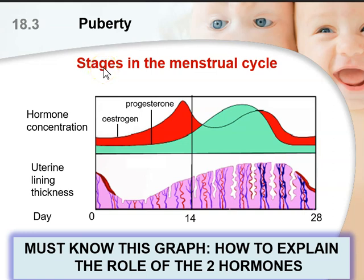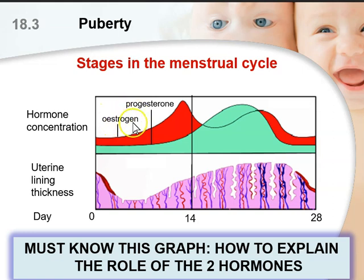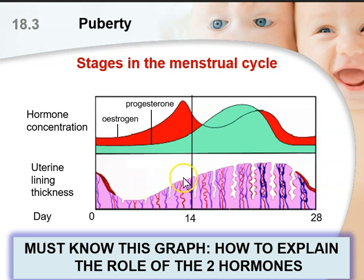Hello everybody, welcome to the third installment of your HPL lecture. In the previous lecture, we spoke about the stages in the menstrual cycle and how the menstrual cycle lasts for 28 days in a female. There are two main hormones: estrogen, which is released first from the ovaries — O comes before P, and O also stands for ovaries. Estrogen is released after menses to cause the growth and repair of the uterine lining to prepare for day 14, which is ovulation.